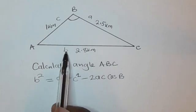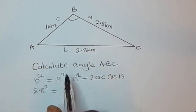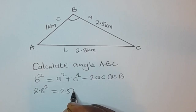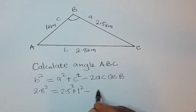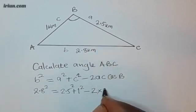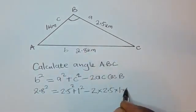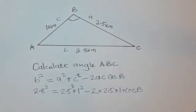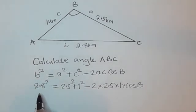Now we replace the values. b is 2.8, so we have 2.8 squared. a is 2.5 and c is 1, so we have 2.5 squared plus 1 squared minus 2 times 2.5 times 1 times cos B.